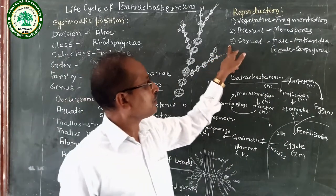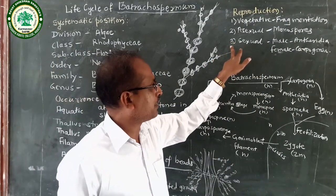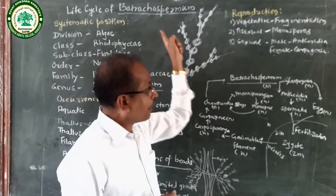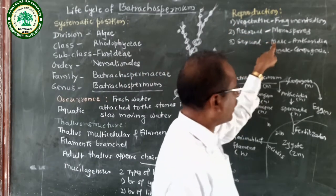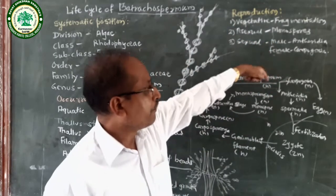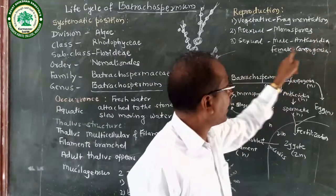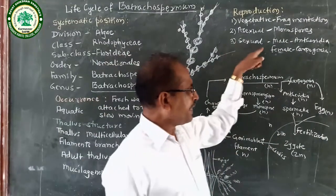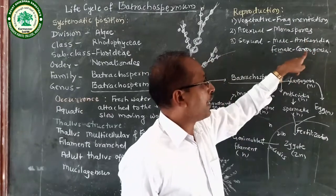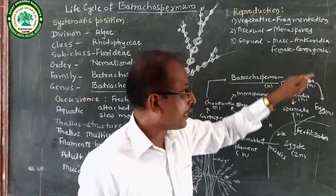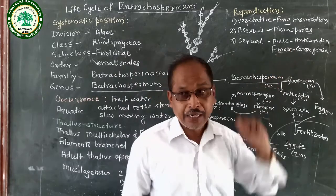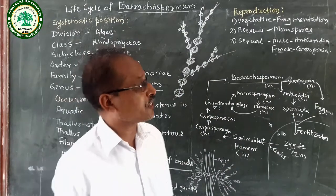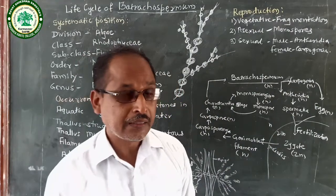The next type is sexual reproduction. In Batrachospermum, there is a male reproductive organ and a female reproductive organ. The male reproductive organ is called Antheridium, and the female reproductive organ is called Carpogonium. Antheridium produces spermatia, and Carpogonium produces an egg. Fertilization takes place between the spermatia and the egg. After fertilization, there is formation of a zygote.